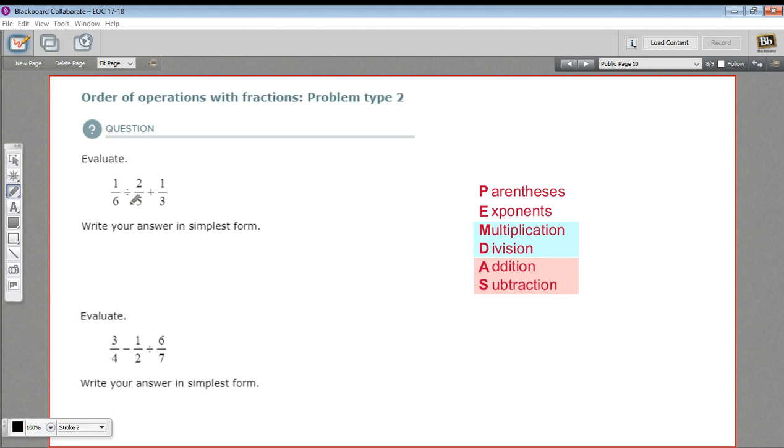I've got 1 sixth divided by 2 fifths plus 1 third. Let's apply the order of operations first. Order of operations says this part of the problem needs to be done first, division before addition.